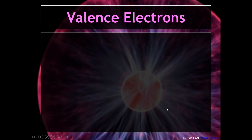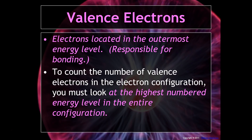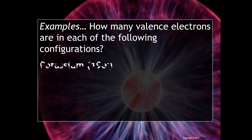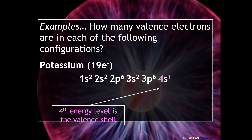The last part is about valence electrons — the most important electrons for bonding, located in the outermost energy level. To count valence electrons, look at the electron configuration and find the highest-numbered energy level in the entire configuration, then add those electrons together. For potassium, looking at its full configuration, 4s1 is the highest-numbered energy level, meaning there is only one electron in the fourth energy level — so potassium has one valence electron.